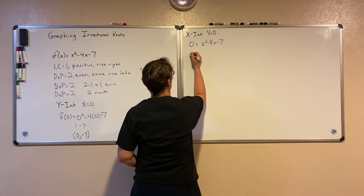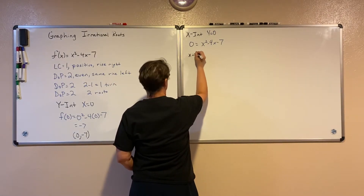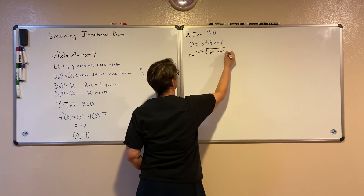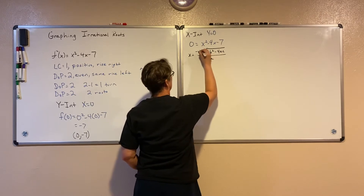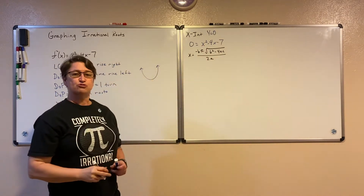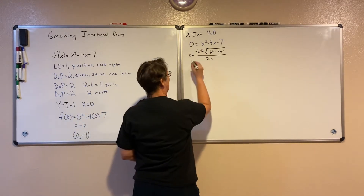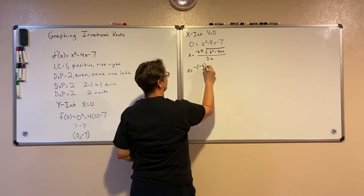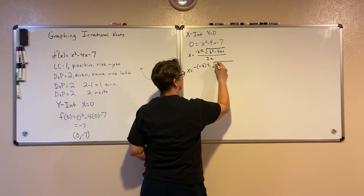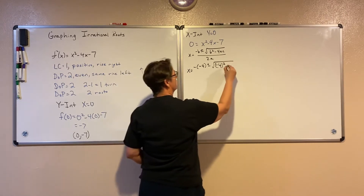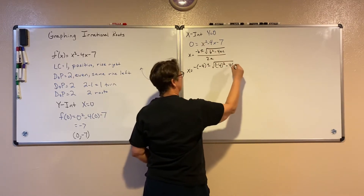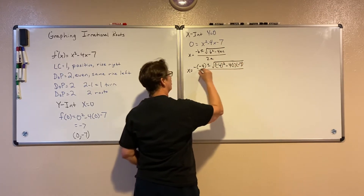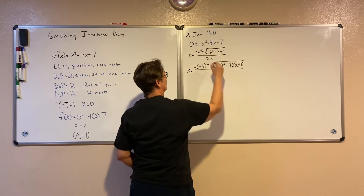I break out the quadratic formula: x equals negative b plus or minus the square root of b squared minus 4ac, all over 2a. My b in this case is negative 4. My b squared is negative 4 squared, minus 4 times a (which is 1), times c (which is negative 7), all over 2 times a, which is 1.